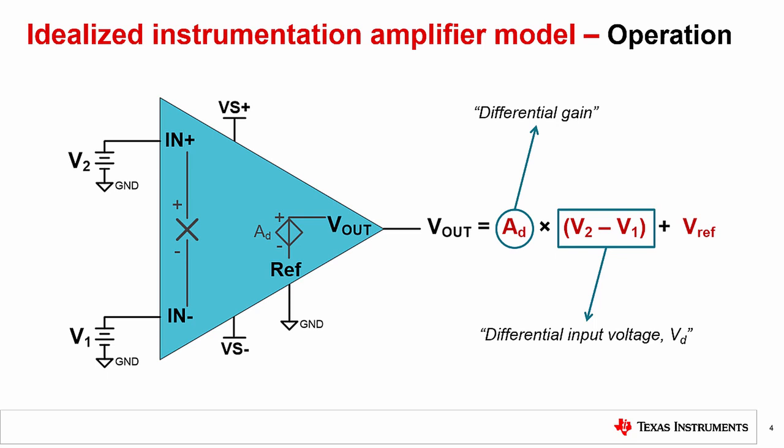Now, let's discuss this operation of amplifying the signals that differ between both inputs. In basic terms, an instrumentation amplifier amplifies the voltage difference between its two inputs. Its output is a single-ended signal proportional to the voltage difference between its two inputs, given with respect to a set reference voltage.